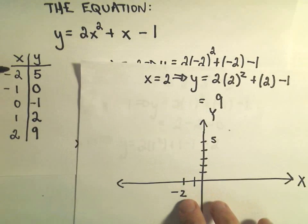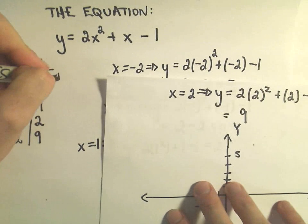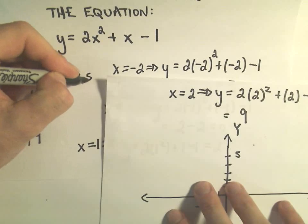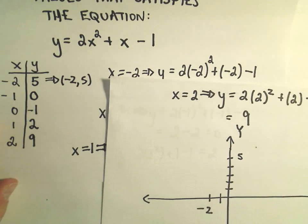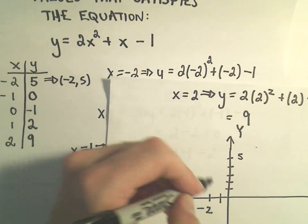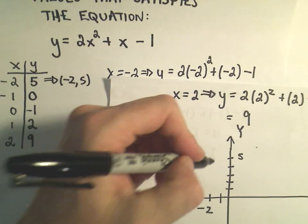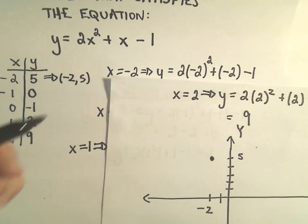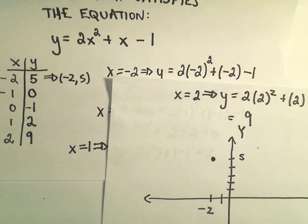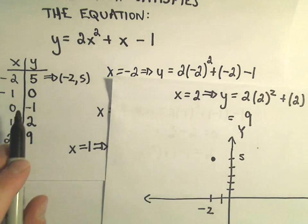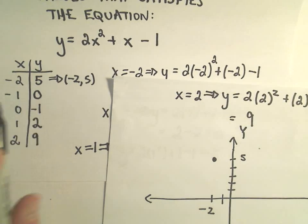So the point negative 2 comma 5, if I plot this point, what this says is negative 2 comma 5 is a point on the graph. So that means I go over 2 units and up 5 units. So we would put a dot right there. It says if we plug negative 1 in, we get 0 out.